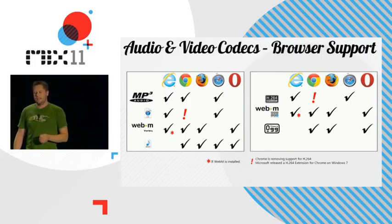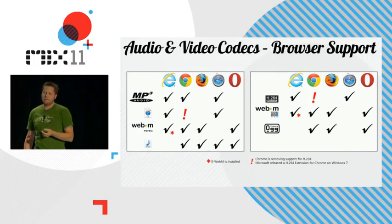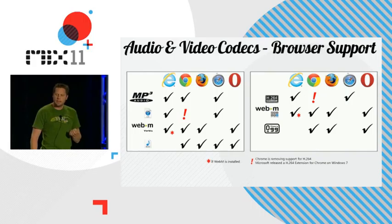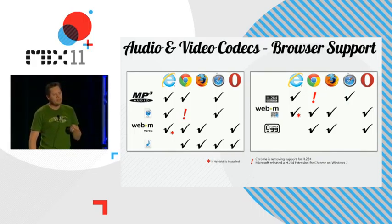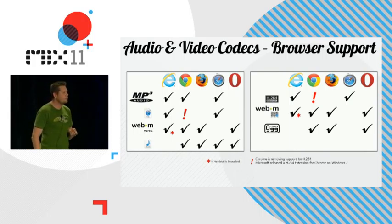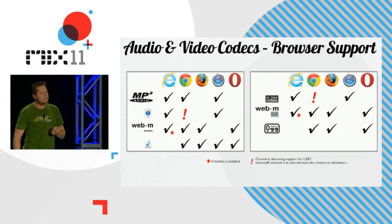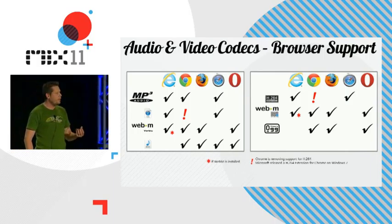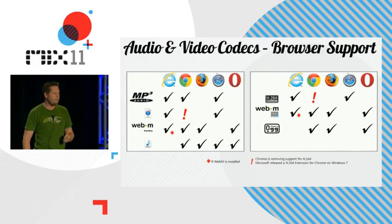You'll notice a few abnormalities — namely the exclamation mark next to Chrome. Today Chrome does support AAC audio and H.264 video, but they've announced they're going to be removing support for that in future versions. If you look at IE9, there's an asterisk next to WebM support. We're not going to ship the codec or the container, but if you want to install the add-on for WebM video inside IE9, you can do that through the test drive site.